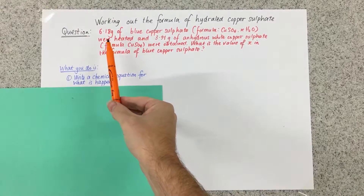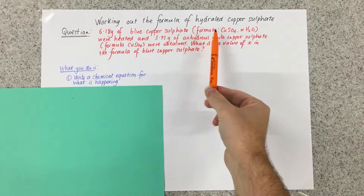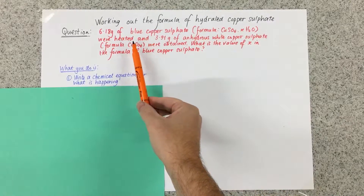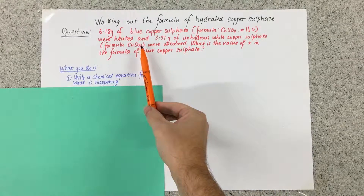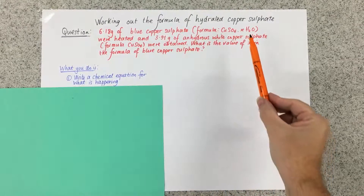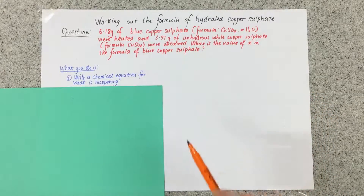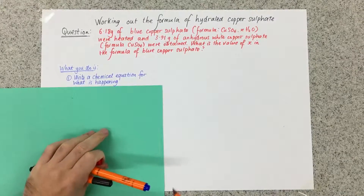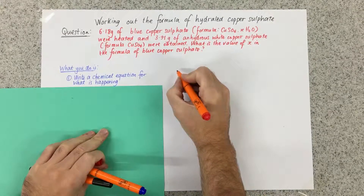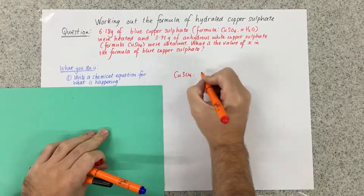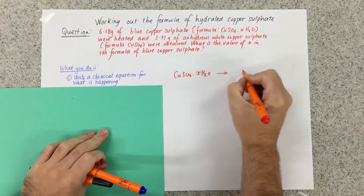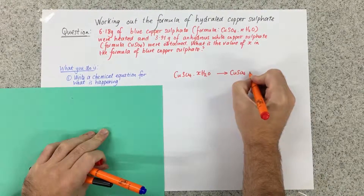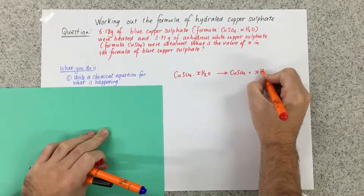So the question says: 6.18 grams of blue copper sulphate CuSO₄·XH₂O were heated and 3.91 grams of anhydrous white copper sulphate, formula CuSO₄, were obtained. What is the value of X in the formula for blue copper sulphate? So the first thing you do is write a chemical equation for what's happening. Copper sulphate with X waters of crystallisation is heated and it gives us copper sulphate and X waters.